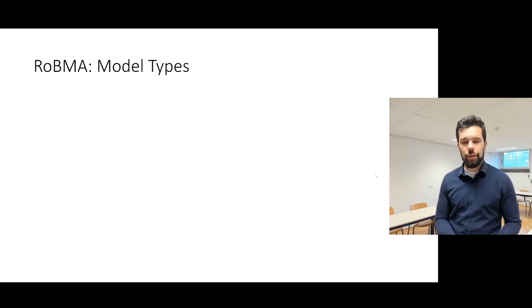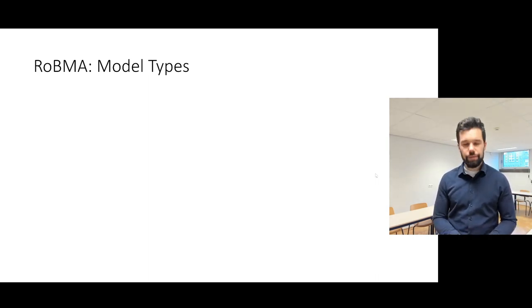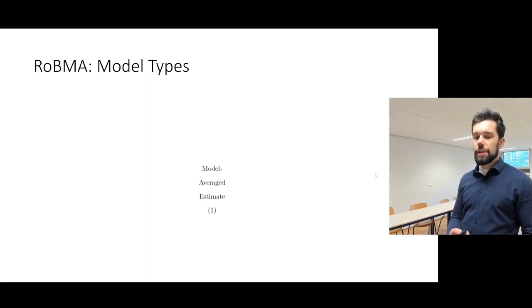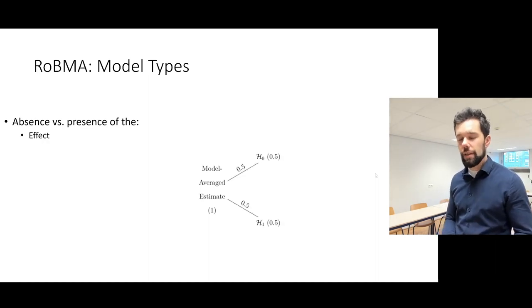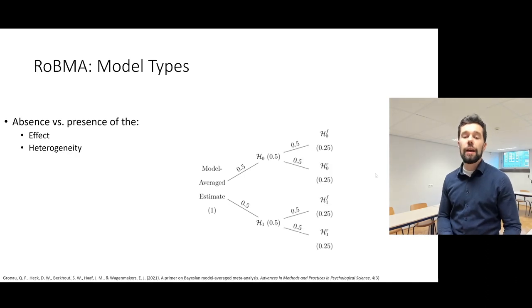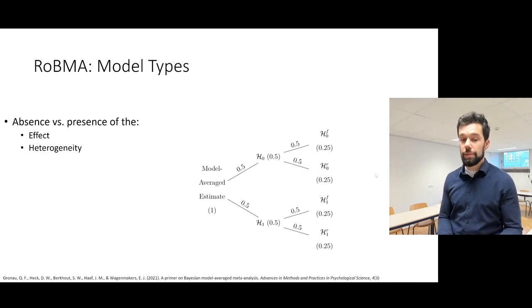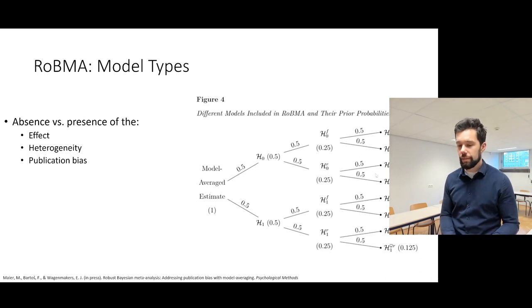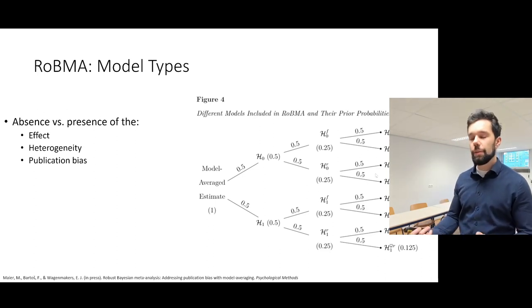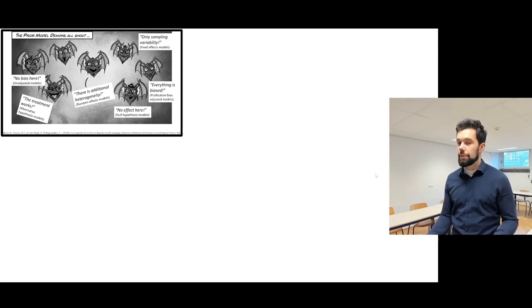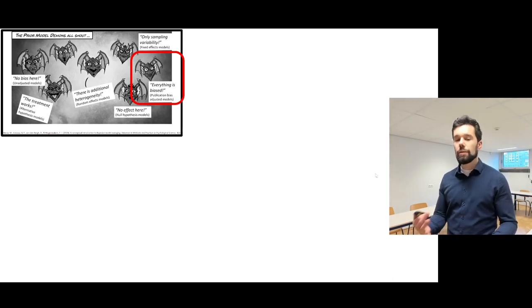We can also visualize this by thinking about splitting the model space. We split it first by absence versus presence of the effect, then again by absence or presence of heterogeneity, and then again by presence or absence of publication bias. In the end, we have eight different model types representing combinations of those different assumptions. But as I mentioned, there are also different assumptions about the type of publication bias, so that component is an overall umbrella that can be split further.